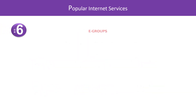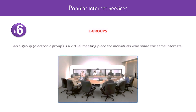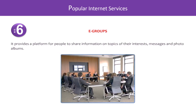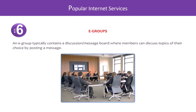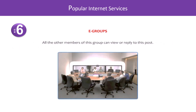Number six: E-groups. An e-group or electronic group is a virtual meeting place for individuals who share the same interests. It provides a platform for people to share information on topics of their interests, messages, and photo albums. An e-group typically contains a discussion or message board where members can discuss topics of their choice by posting messages. All the members of this group can view or reply to these posts.